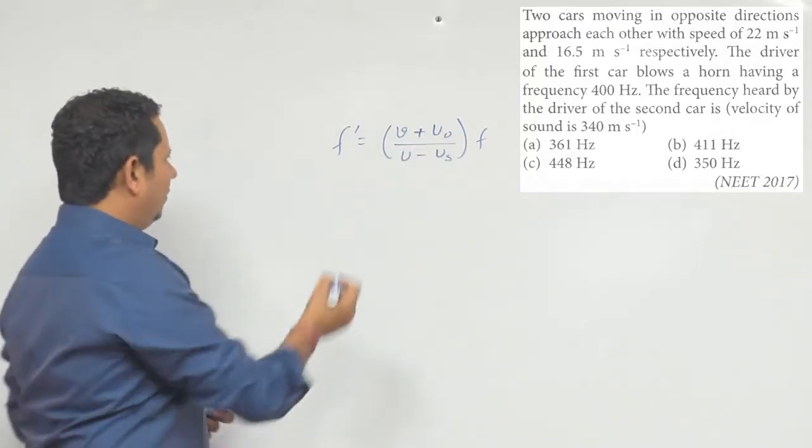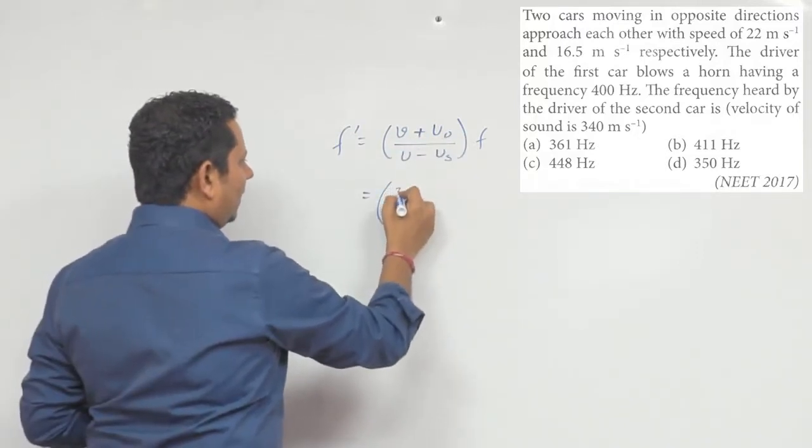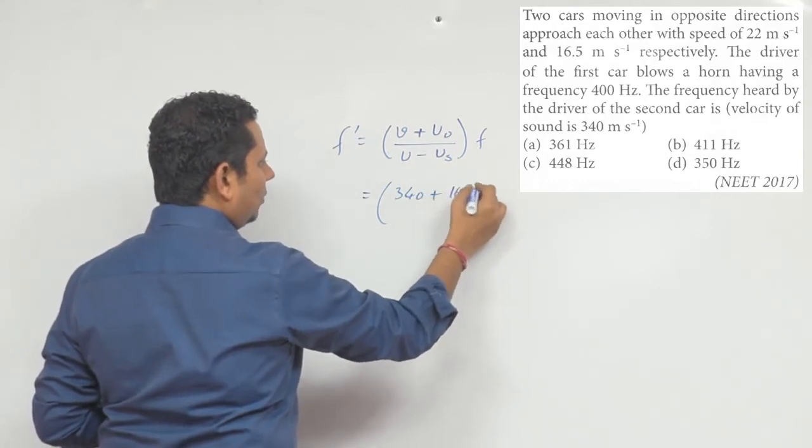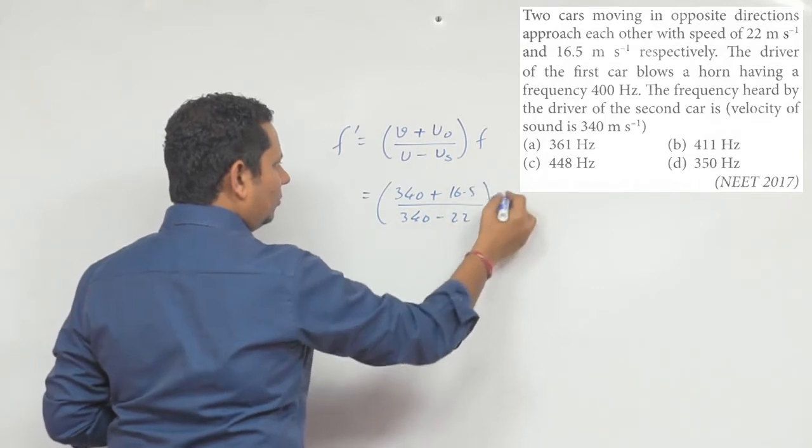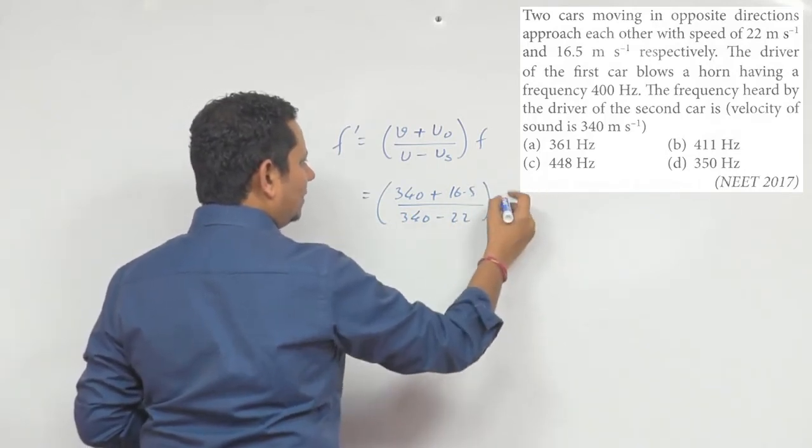So the value will be 340 plus 16.5 divided by 340 minus 22, multiplied by f, where f equals 400.